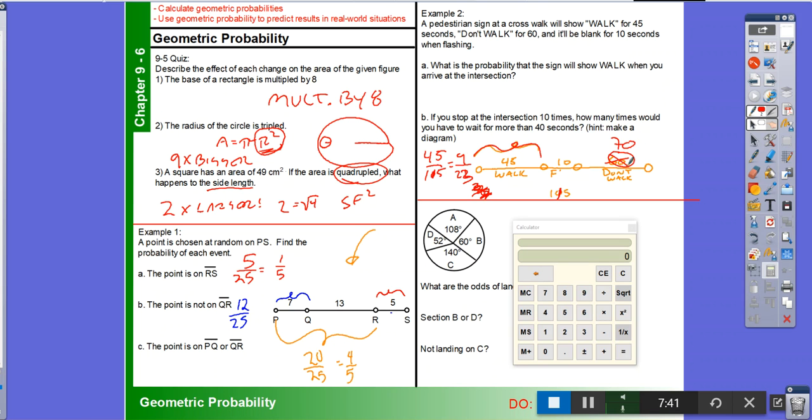My goodness. But I don't know what that really means a whole lot. 9/23. So I'm going to go 9 divided by 23. So almost a 40% chance or a 39% chance that I'll get there when it already says walk.